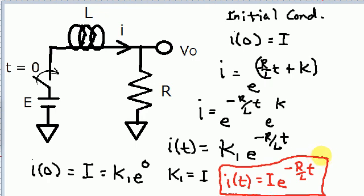My next video will show having the forcing function and not having an initial condition of I of zero equals I.